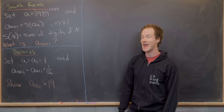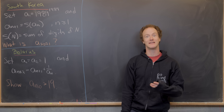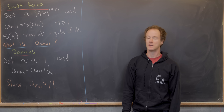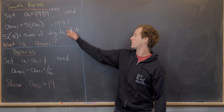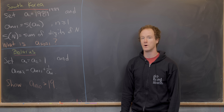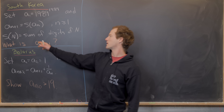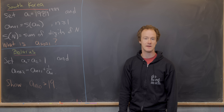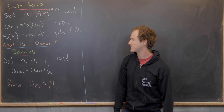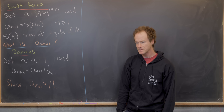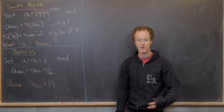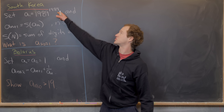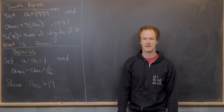We want to set A₁ equal to 1989 to the 1989, and then A_{n+1} equal to S of A_n for n ≥ 1, where S(N) means the sum of the digits of N. Our goal is to find A_{2021} — in other words, we're continually finding the sum of the digits of this starting number 2021 times.